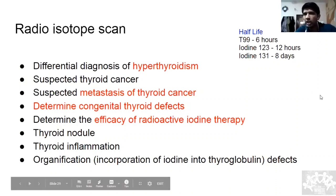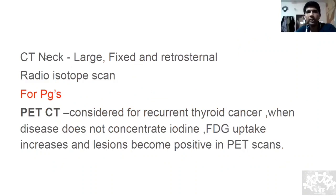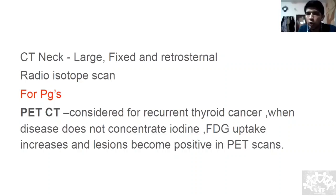CT neck: ultrasound is sufficient for most cases. Only three indications for CT scan of the neck — large goiter, fixed goiter, or retrosternal goiter, because ultrasound cannot image behind the sternum. PET CT for undergraduates: only for medullary carcinoma. For postgraduates, PET CT is used when differentiated thyroid carcinoma recurs post-surgery and no longer takes up iodine — cancerous cells take up fluorodeoxyglucose and are visualized.